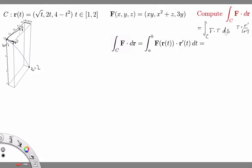Essentially that's because the ds has a factor magnitude of r' in it, as we've seen in previous examples.